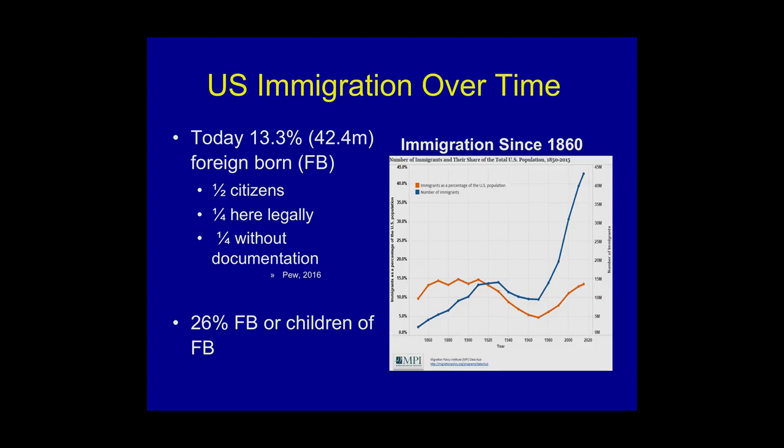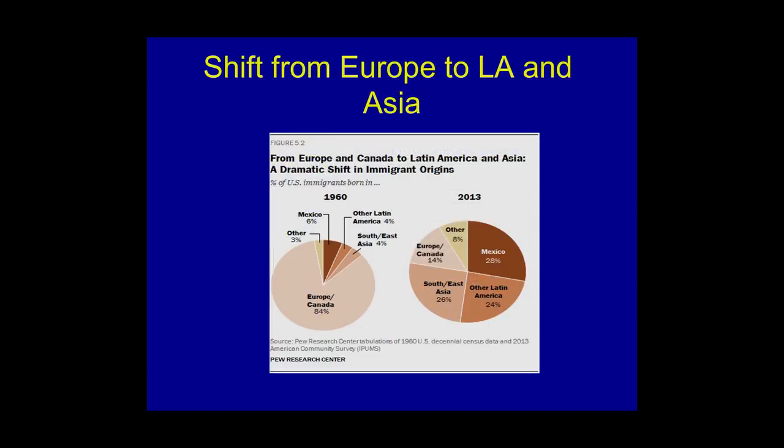About a quarter of people living in the US are either foreign-born or children of the foreign-born. Our era has been dominated by an influx of people from Latin America and South Asia. In the 1960s after World War II, most people coming here were from Canada and Europe, but that has changed tremendously.